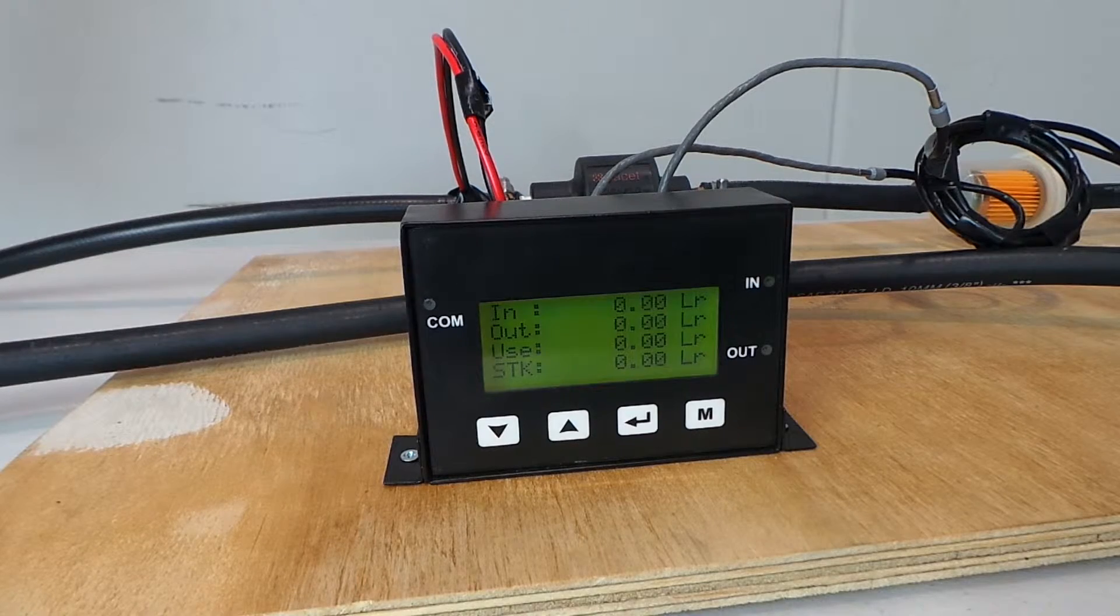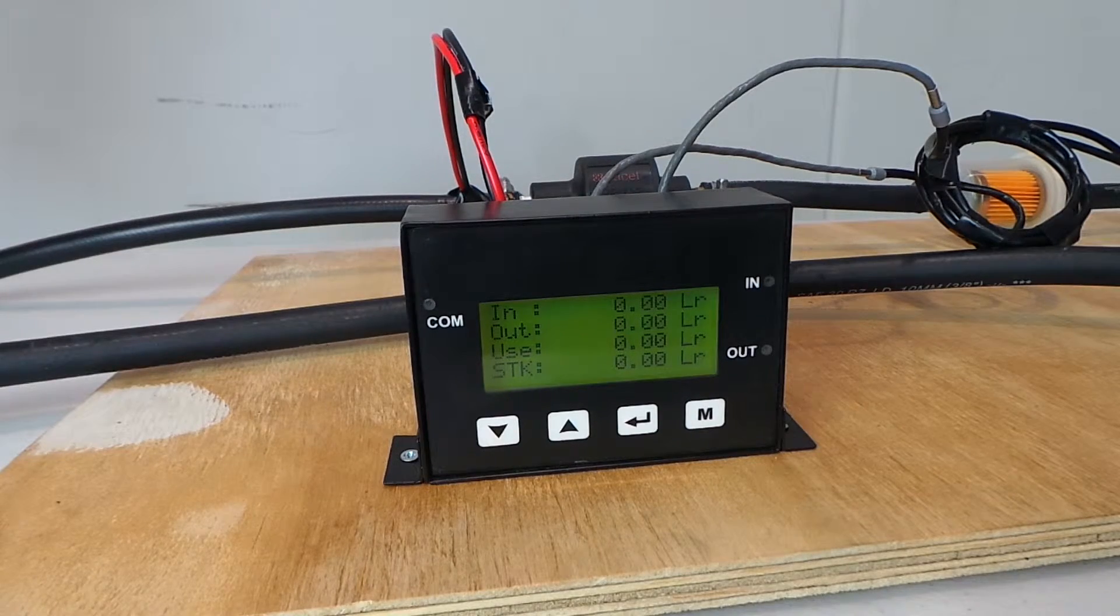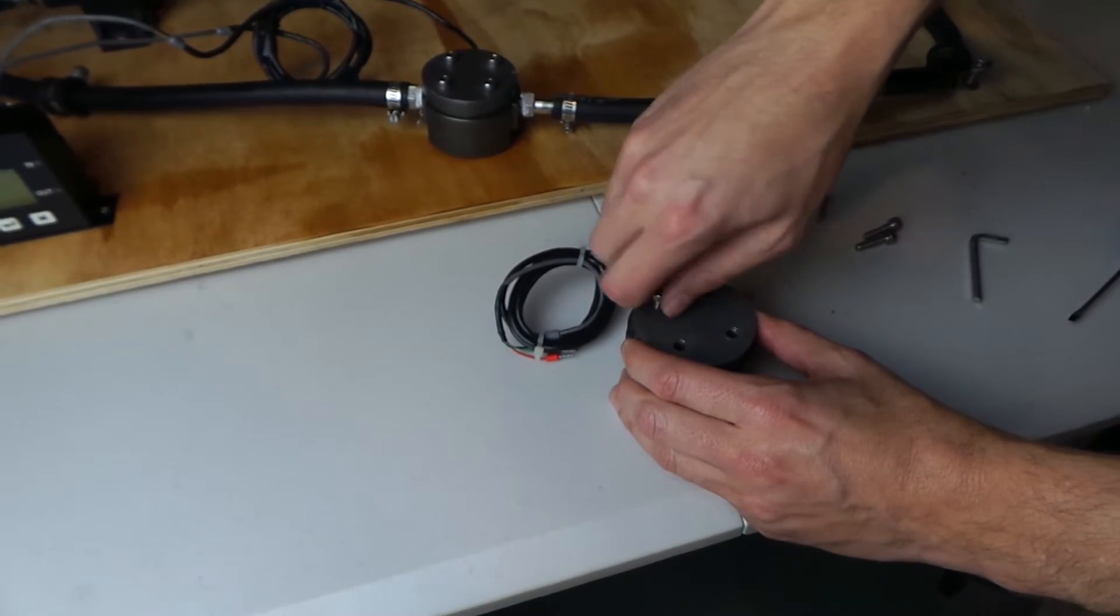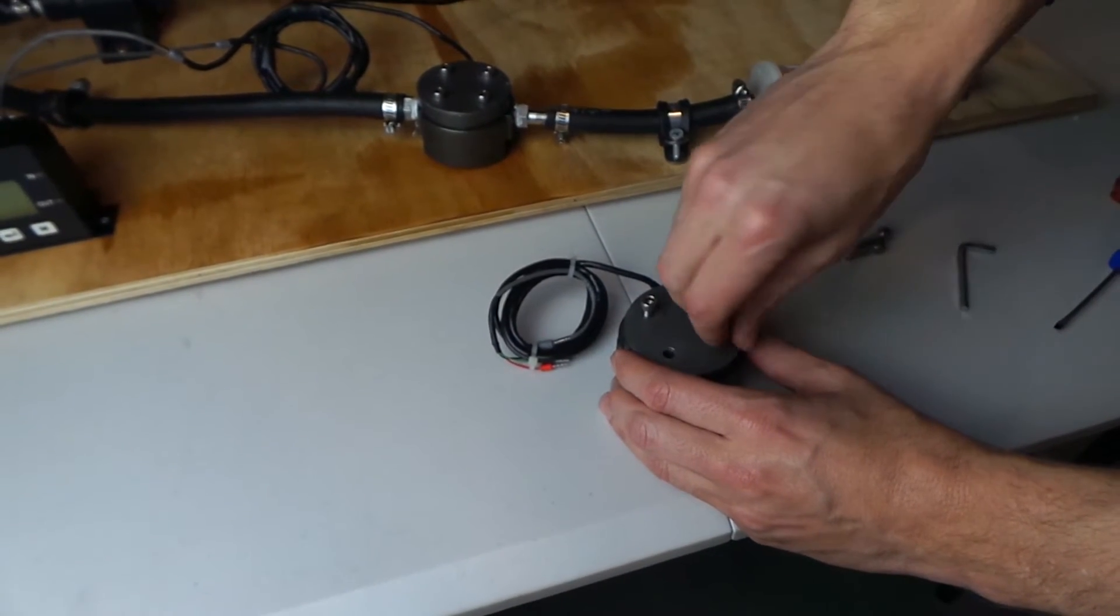If the gears are spinning but you are not getting a reading, this is usually the cause. When replacing the gears, ensure that they are at right angles. Close the case and tighten.